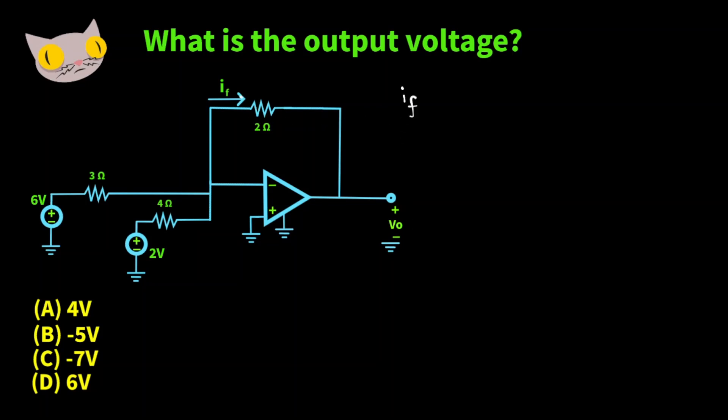Let's first find the value of this current I sub F. To do that we're going to need V1 over R1, and we can call this 6 volt source V1 and this 3 ohm resistor R1. And we're going to want to add V2 over R2 to that. And we can call this 2 volt source V2 and we'll call this 4 ohm resistor R2.